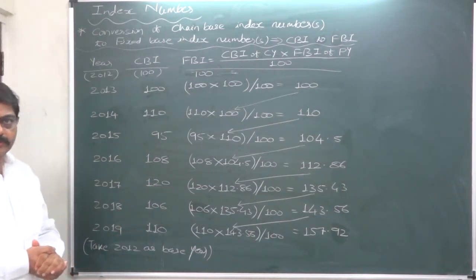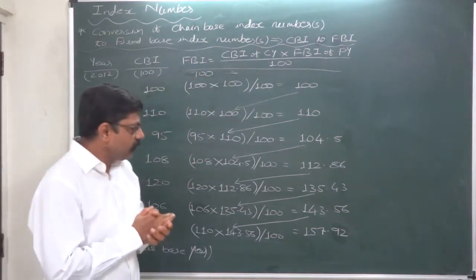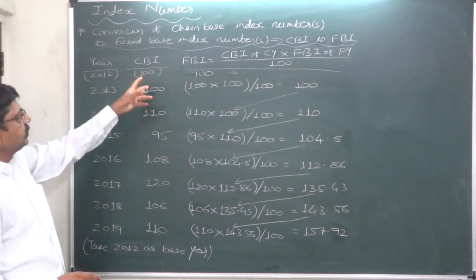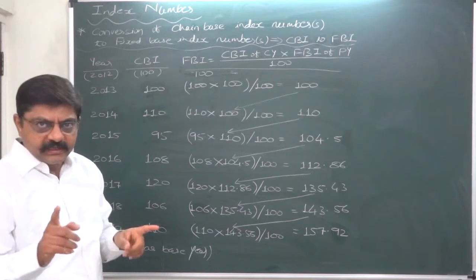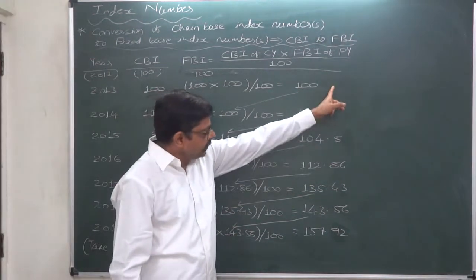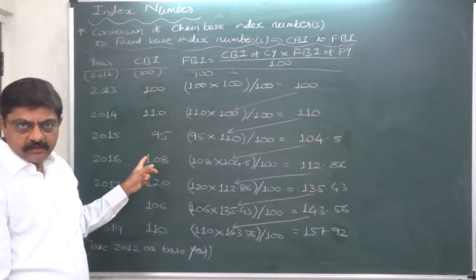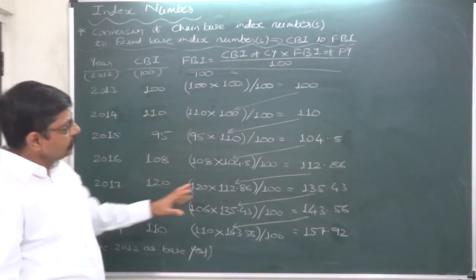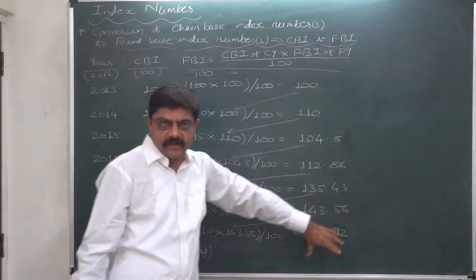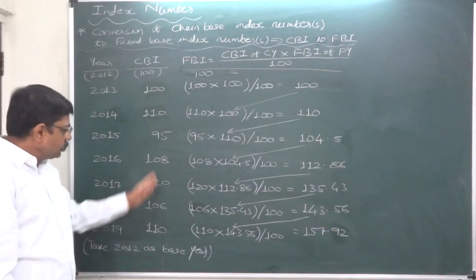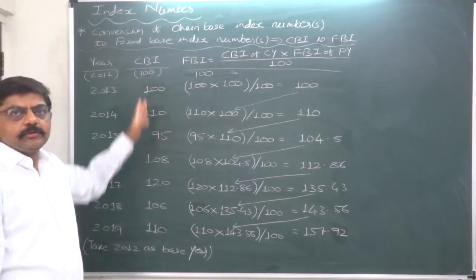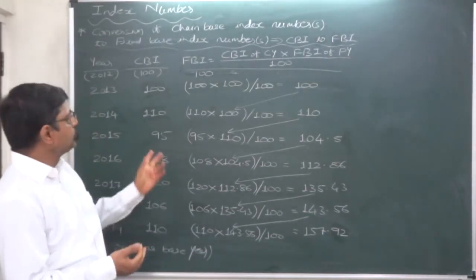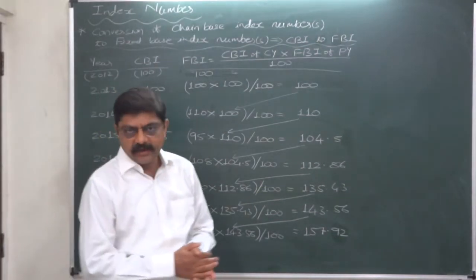I am going to give you one more homework, but you will be able to do it only after watching the next lecture, which covers the reverse topic: conversion of fixed base index numbers into chain base index numbers. After learning that process, the homework is to convert all these fixed base index numbers back into chain base index numbers. The approximate answers should come close to the original values — small differences may arise due to rounding to two decimal places.